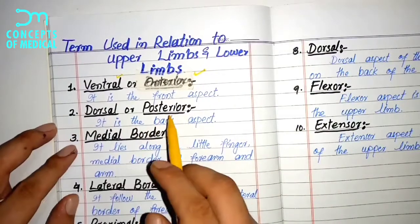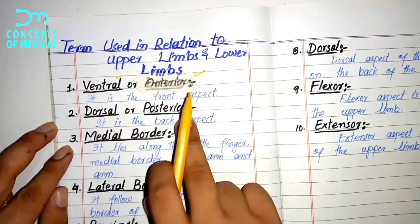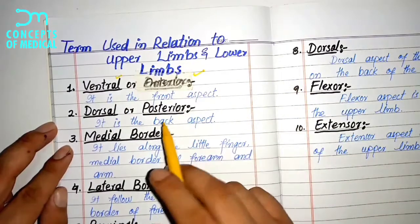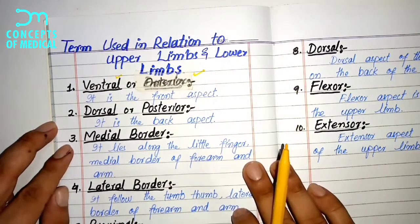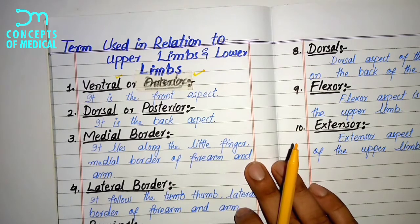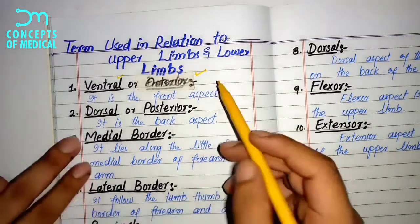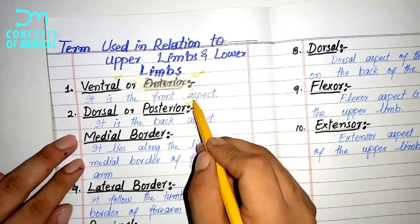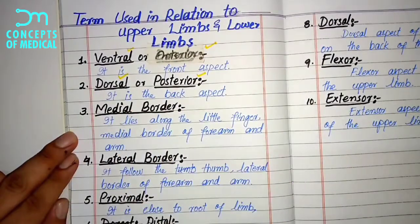The second term is dorsal or posterior. It describes the back aspect of the forearm, upper limbs, or lower limbs. Any structure present at the back of the upper or lower limbs in anatomical position uses these two terms.